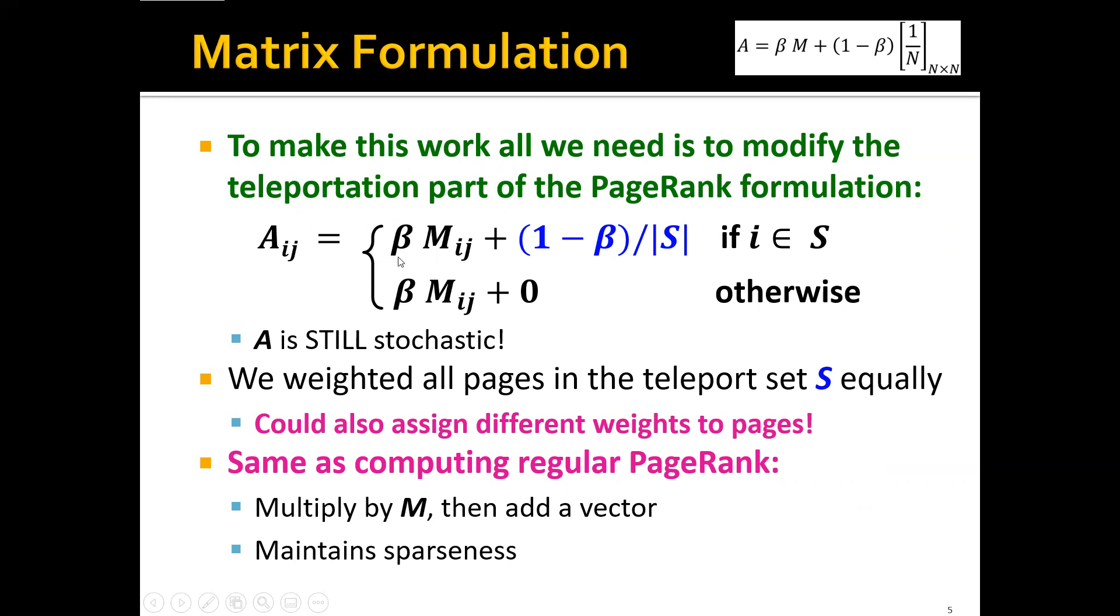And the second term will be (1 minus beta) over the size of S. So this is basically to allocate the overall weight of (1 minus beta) equally to each web page in the teleport set.